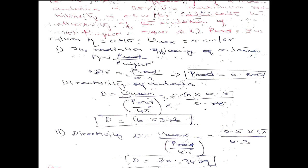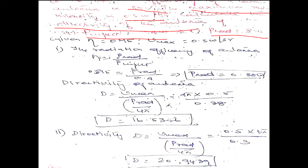We are going to continue the problem. The given problem: the antenna efficiency is 35%, the maximum radiation intensity is given as 0.5 watt. You are asked to calculate the directivity of the antenna for two cases: one with a power input of 0.4 watt, and another with a radiation power of 3 watt.